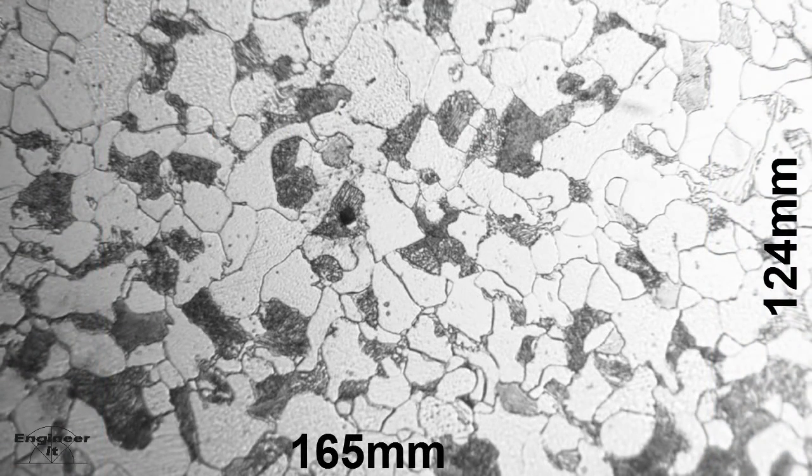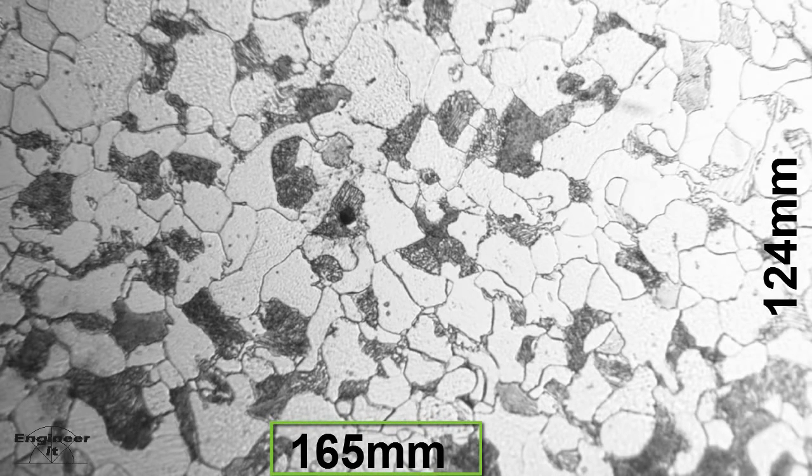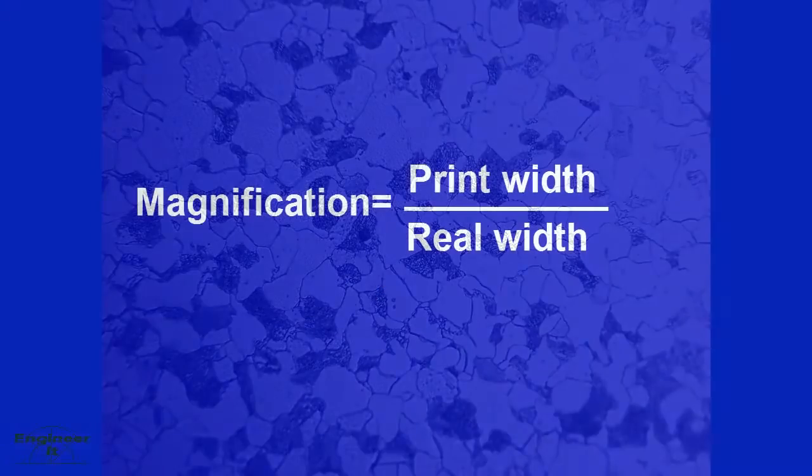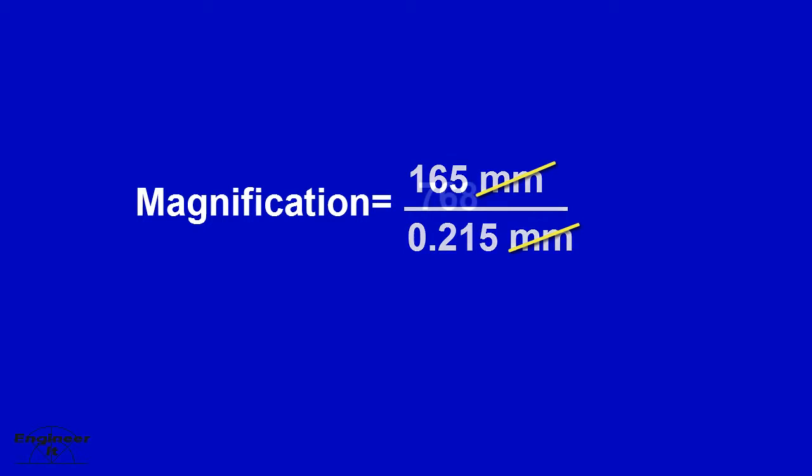In order to begin, we must find the print size dimensions of the photo. We can select either the width or the height. Let's use the width of 165 mm, which is the width of the photo. The actual width that the photo covers on the steel sample is 0.215 mm. Knowing the dimensions, we can solve for the magnification. This solves part 1.